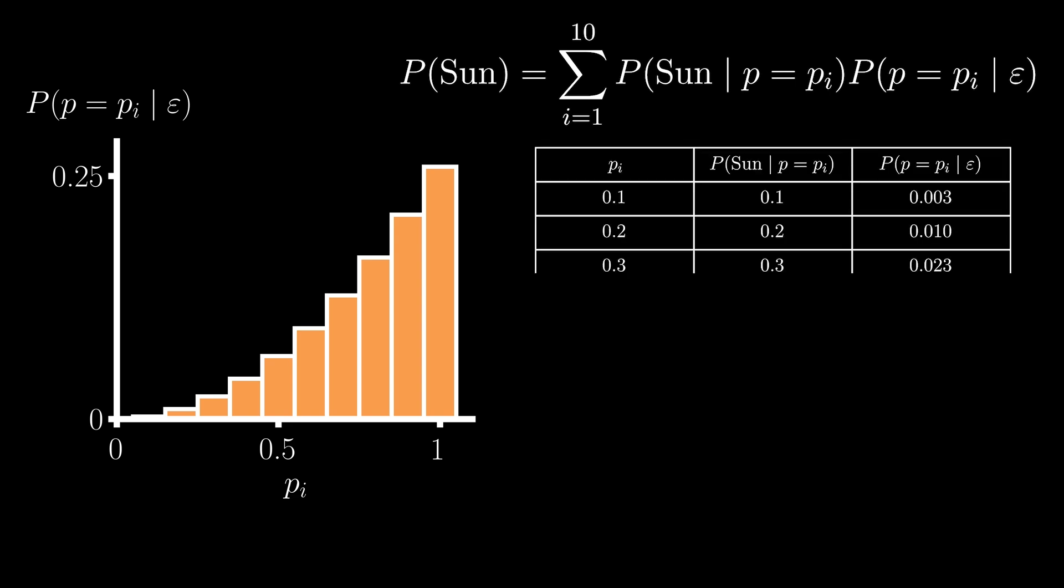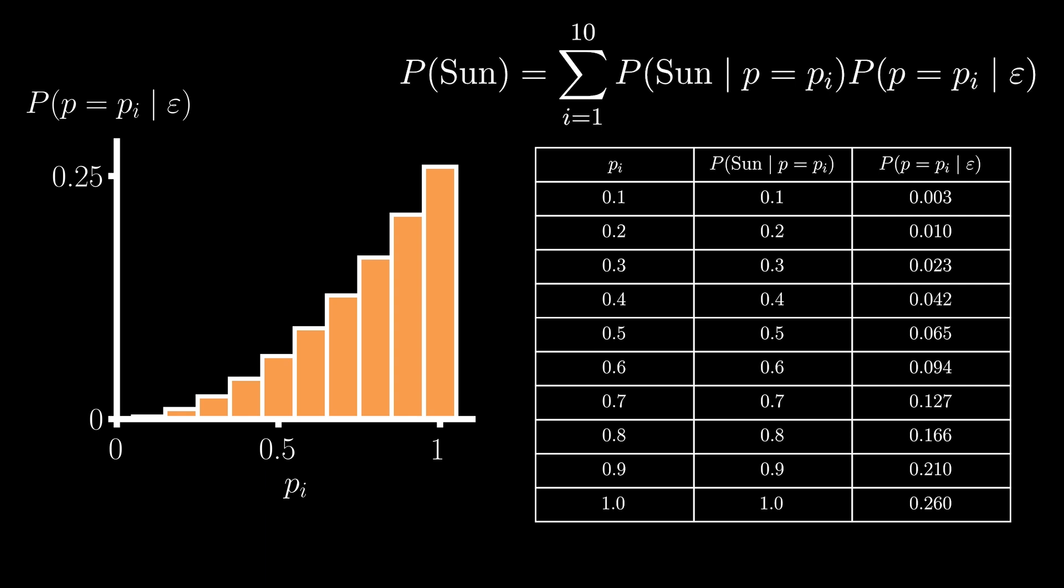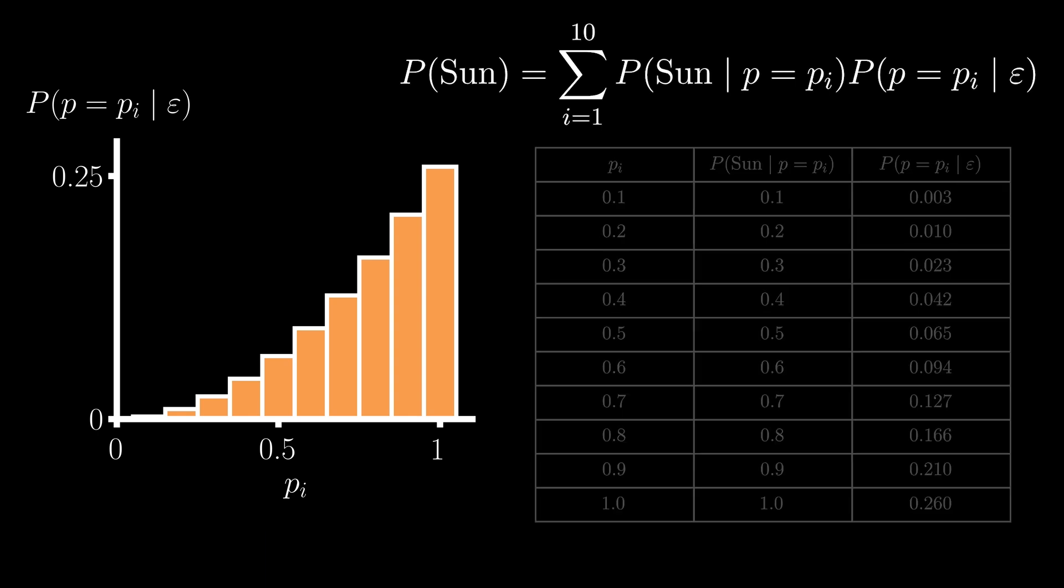For this particular problem, given that p is implicitly the probability that the sun will rise, then this equation is simply our Bayesian estimator from earlier, and therefore we arrive at 0.786. And that's it. We believe there is a 78.6% chance the sun will rise tomorrow.